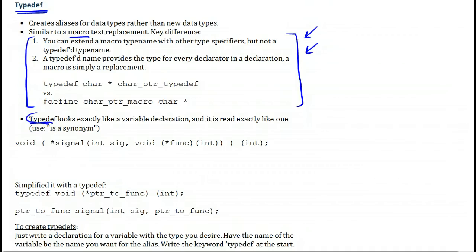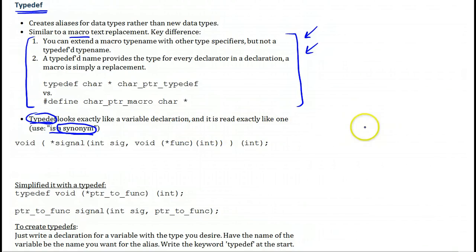When you see typedef in a declaration, you read the declaration exactly as we learned, with one difference: you will add 'is a synonym of' after the variable name. Once you get to the variable, you say the variable 'is a synonym of' and then continue. It's a synonym because we're just creating a synonym — a different name — not actually creating a new type.